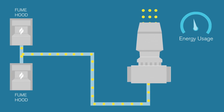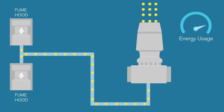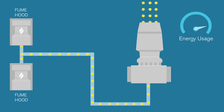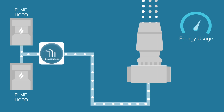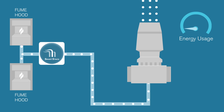In other cases, it is not possible to add a bypass damper. Similar to Scenario 3, this will limit lab flow reduction via energy conservation measures. Here, SmartStack monitors exhaust contaminants and, instead of controlling a bypass damper,